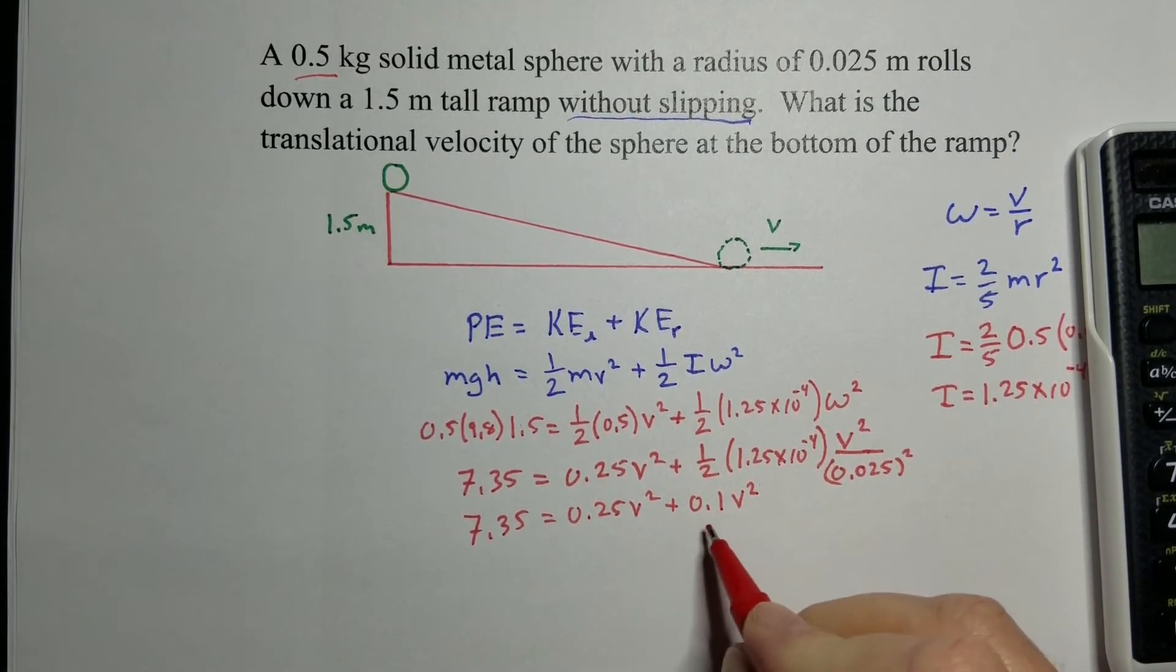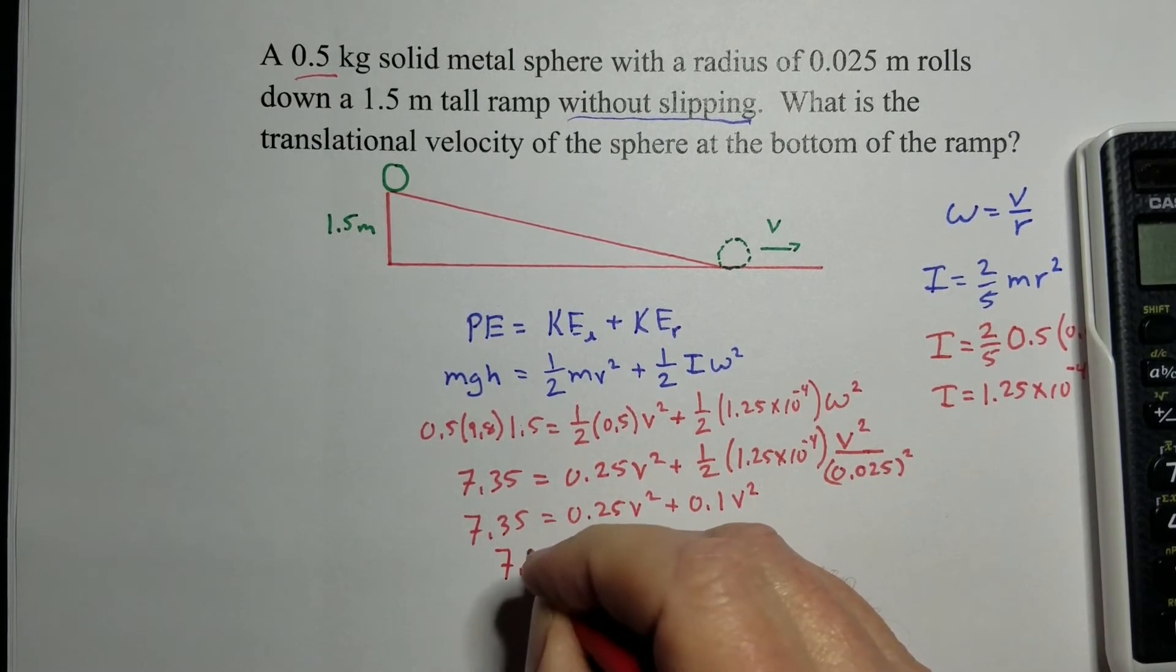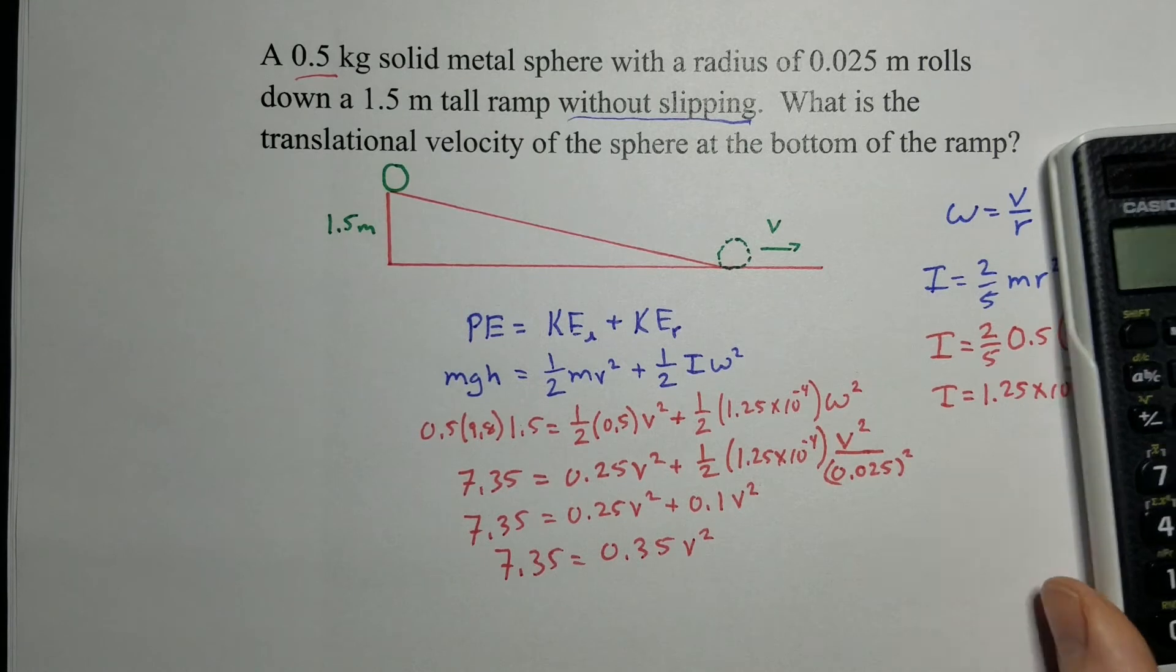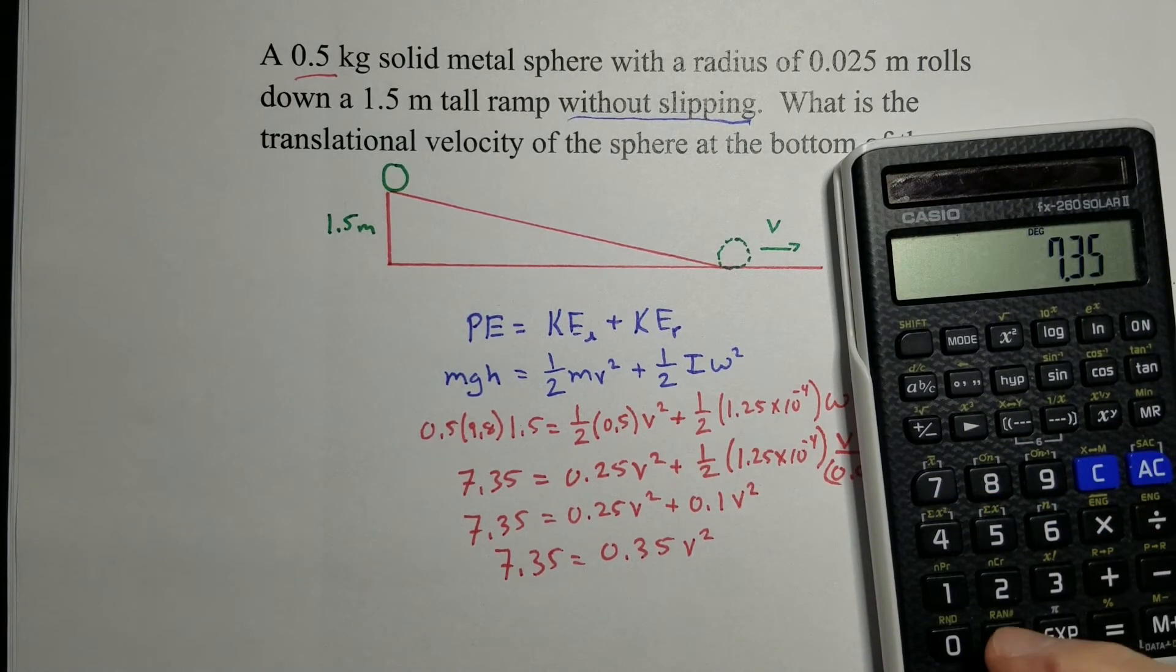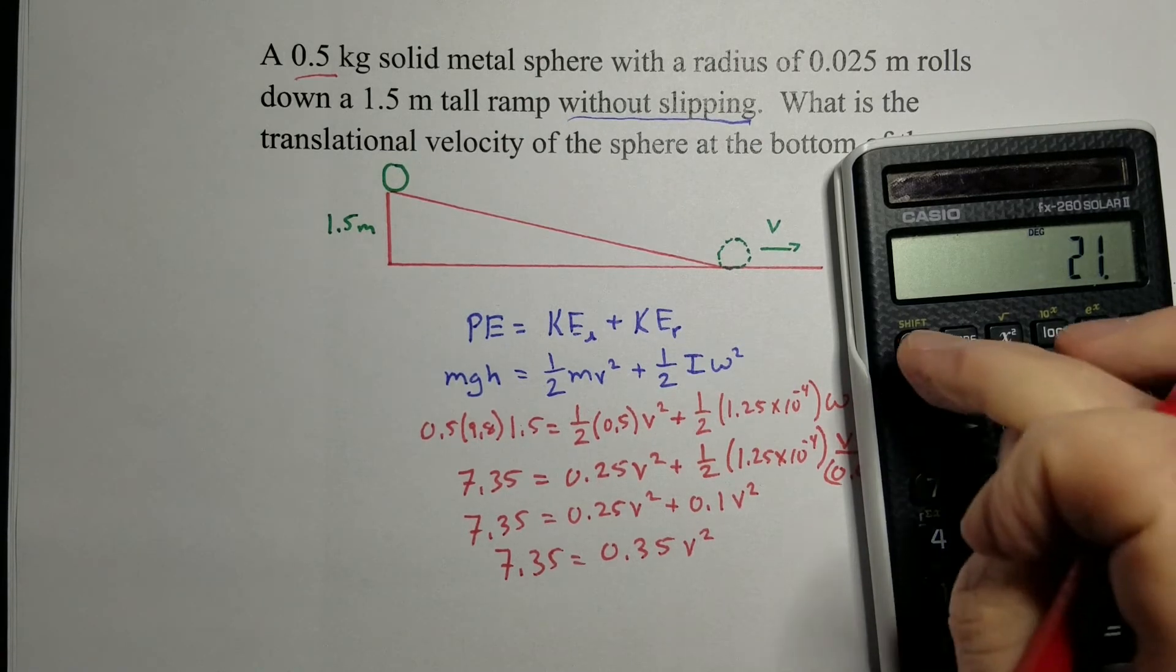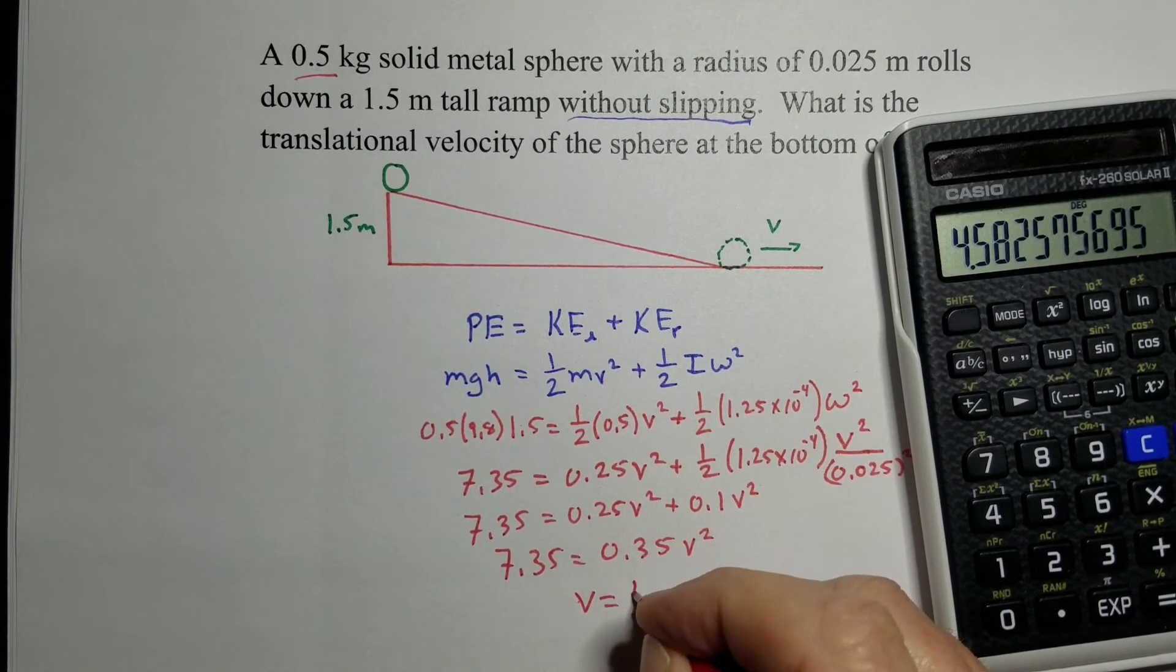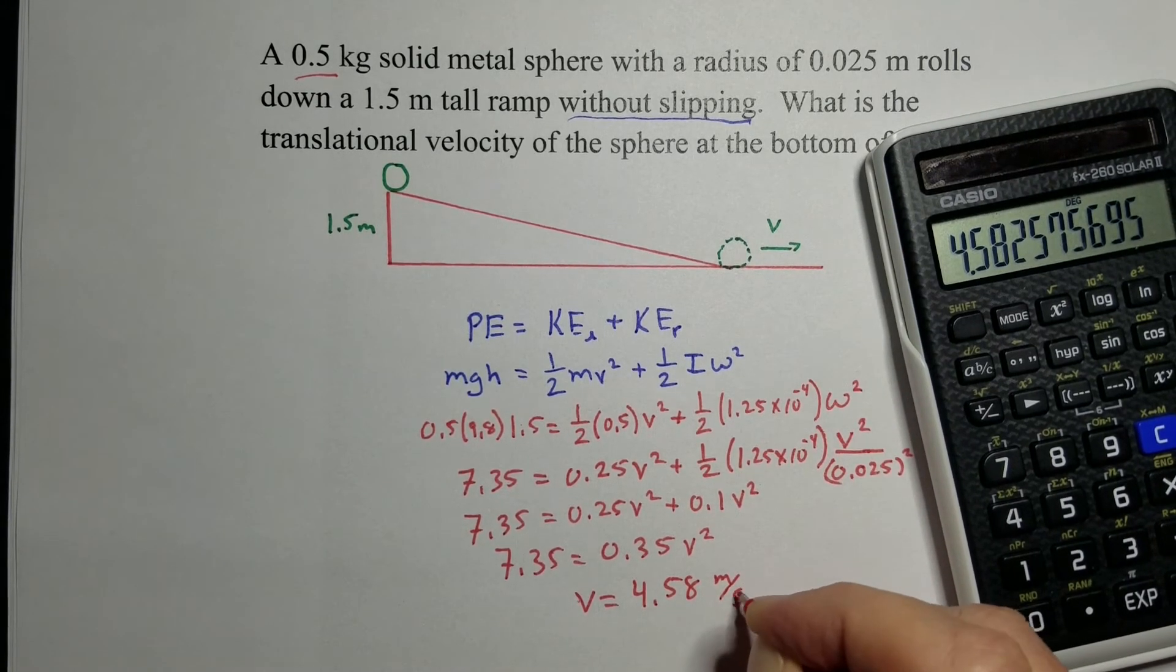0.25 v squared plus 0.1 v squared is 0.35 v squared. And let's just solve that now. So 7.35 divided by 0.35 equals that, take the square root, and we get a translational velocity at the bottom to be 4.58 meters per second.